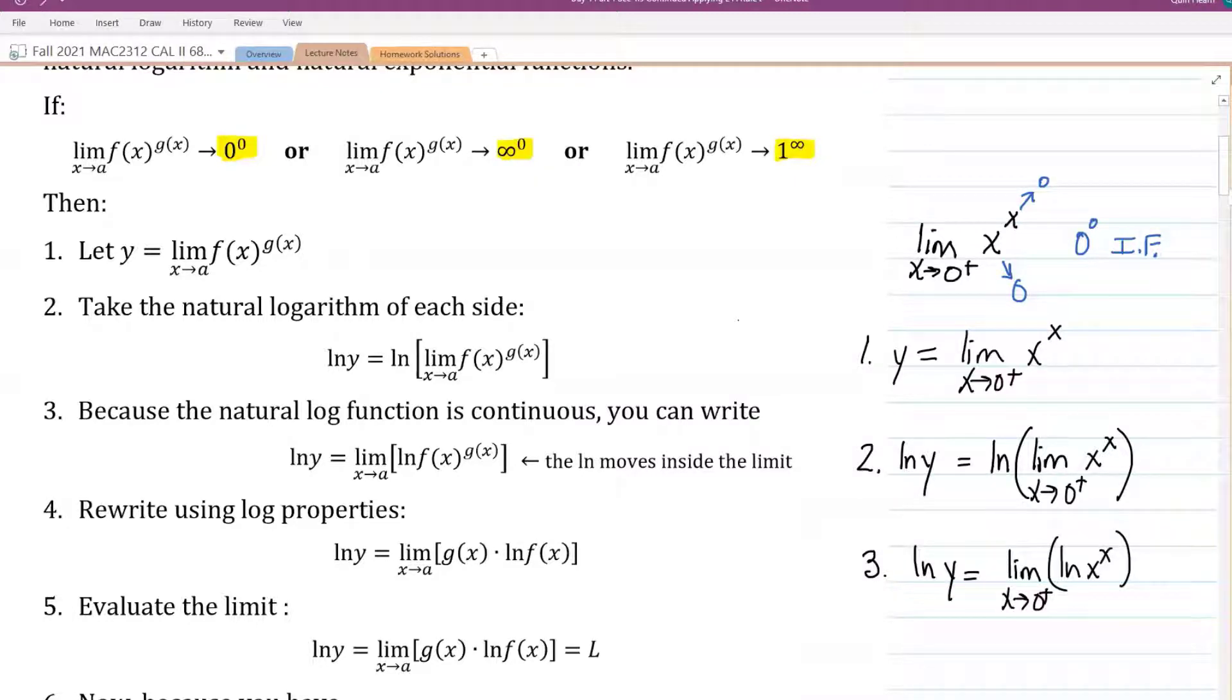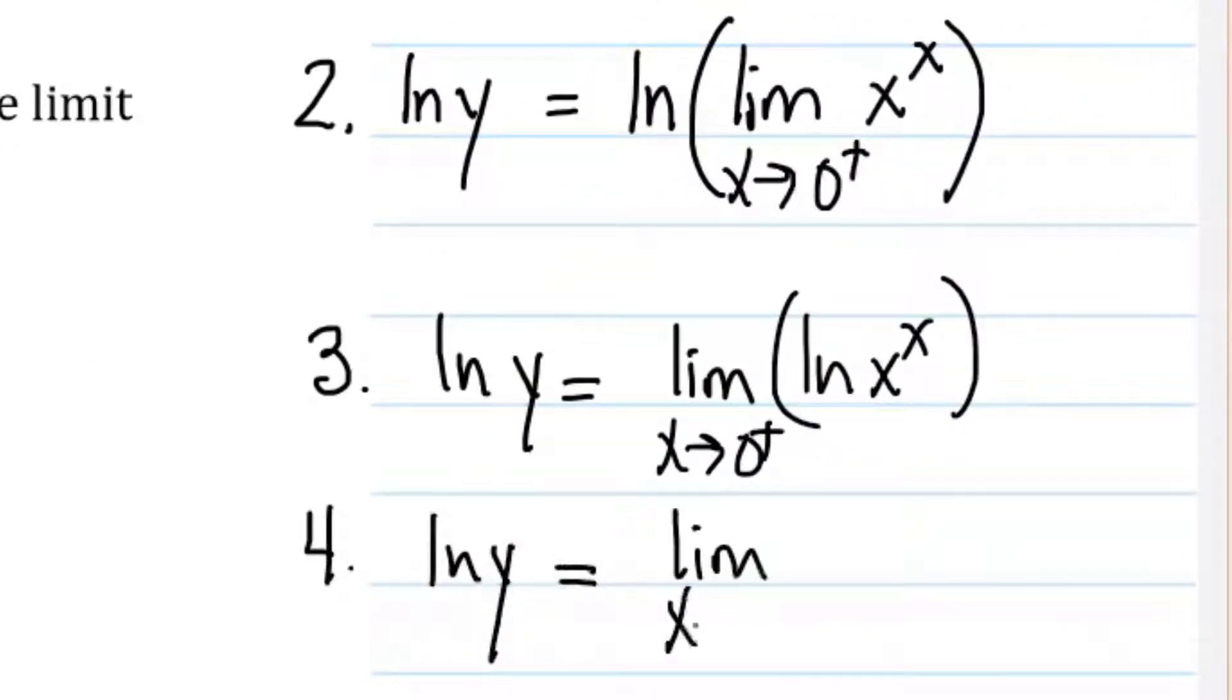And then the fourth step is to rewrite it using the property of logarithms. So I'm going to write natural log of y equals the limit as x approaches zero from the right of, bring the x out front.